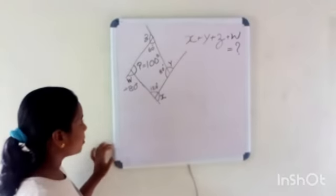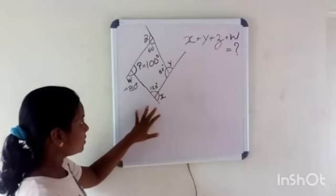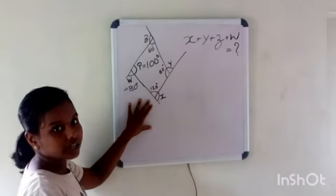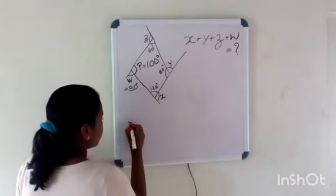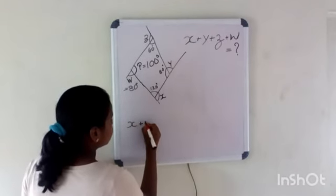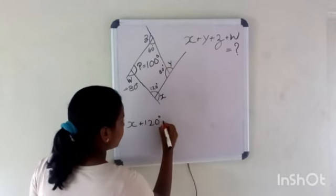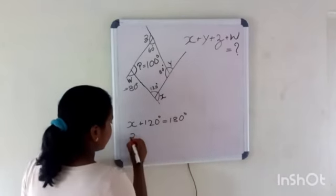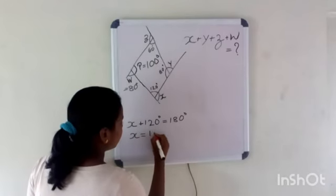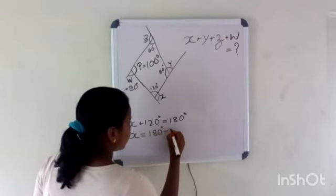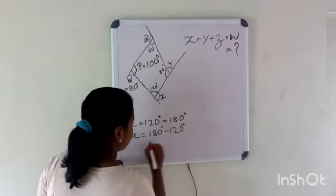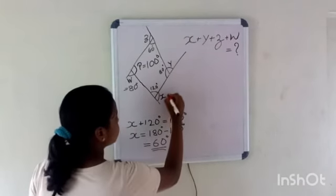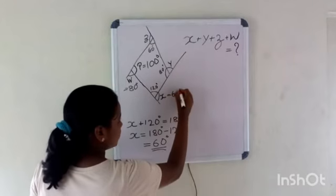Now we are going to find the value of X. This is also a linear pair, so linear pair equals 180 degrees. X plus 120 degrees equals 180 degrees, and X equals 180 minus 120, which equals 60 degrees.